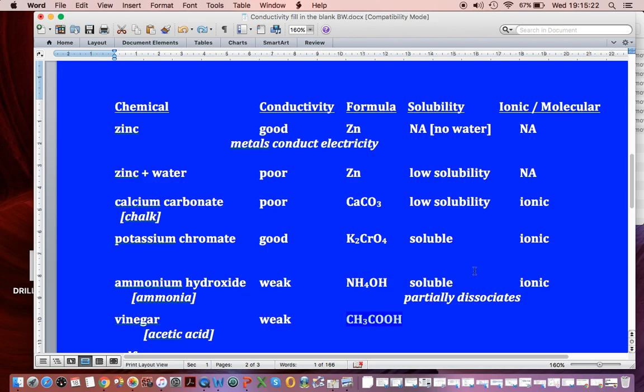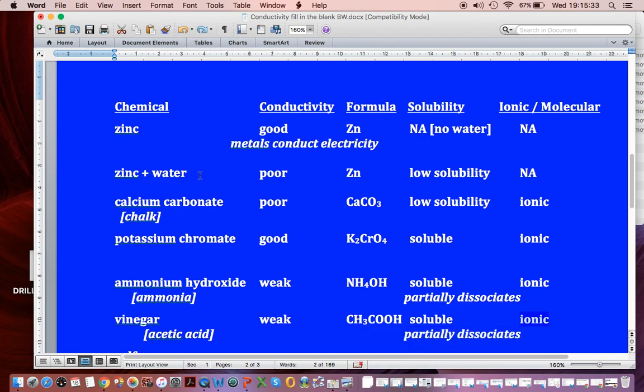There's its formula, and this H at the end makes it an acid, acetic acid. And it behaved in the same way. It's soluble. But it doesn't fully dissociate. That's why it says partially dissociates. And it's behaving ionically.